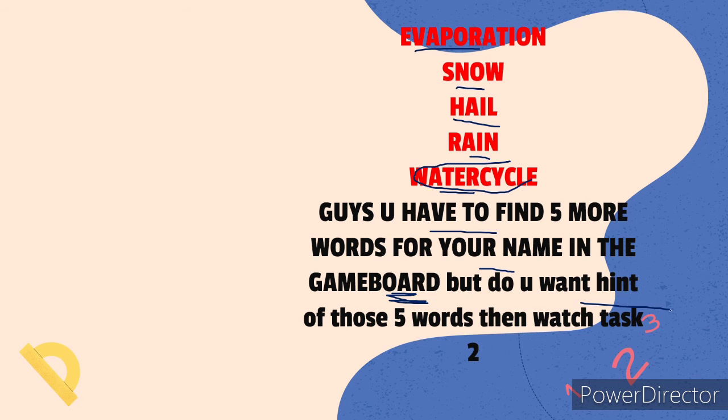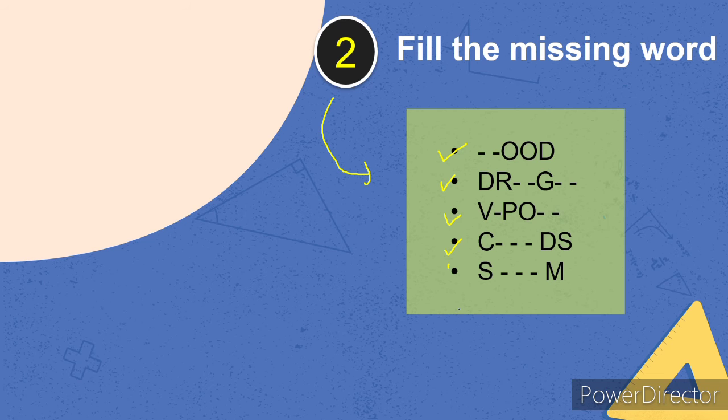So if you need your name in the game board, then use a hint and give me an answer in the comments. So the first word is this: blank, blank, and then O-O-D.